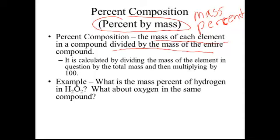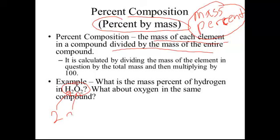For example, what is the mass percent of hydrogen in hydrogen peroxide, H2O2? To solve that, we need to determine the mass of the entire molecule. From the periodic table, the mass of hydrogen is 1 and there are two of them, so the mass contribution of hydrogen is 2. The mass of oxygen is 16 and there are two of those, so 16 times 2 is 32. The whole mass of the molecule is 34 grams per mole.